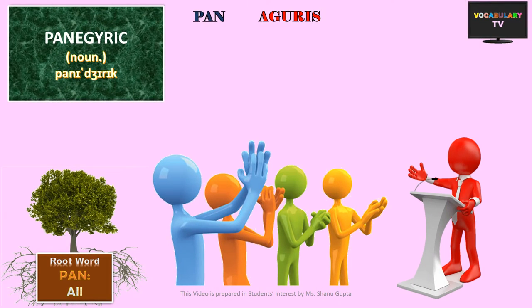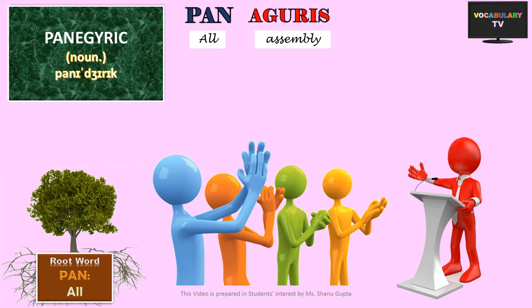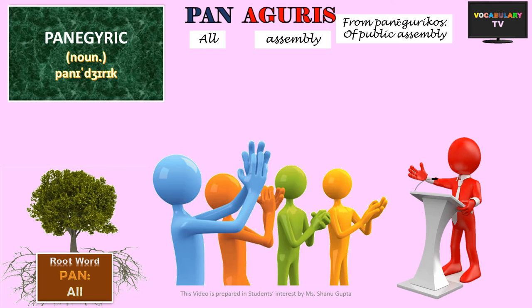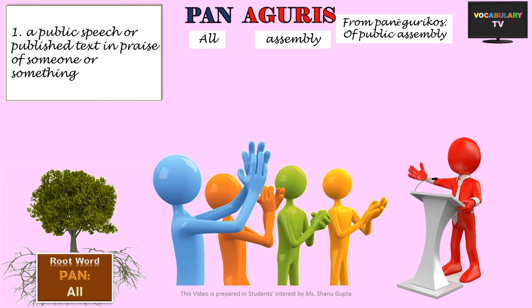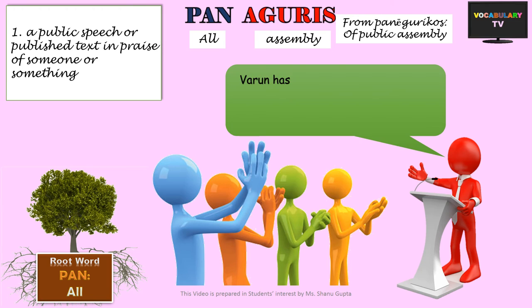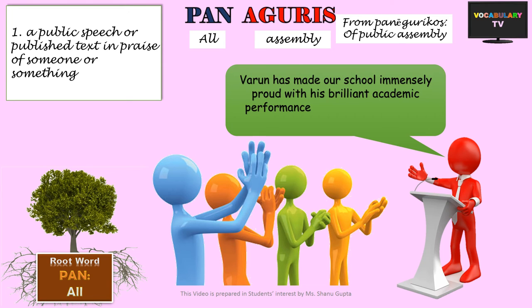The next word based on Pan is Panegyric, which literally means 'all assembly' — something that relates to a public assembly. In such assemblies, long speeches are made in which someone is praised or honoured, so the meaning of the word has evolved to a public speech or published text in praise of someone or something. A Panegyric is a speech or article that praises someone or something greatly — for example, the speaker on the dais is delivering a Panegyric in praise of one of the students of his school and receives a round of applause from the audience.